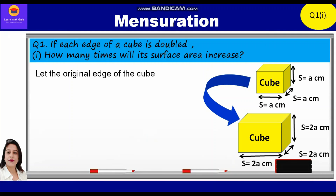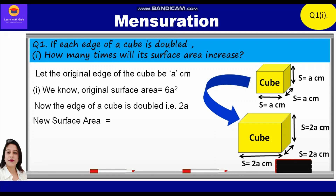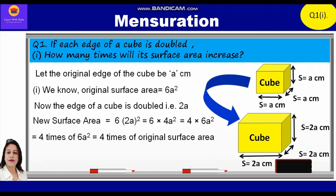Let's start with the solution. Let the original edge of the cube be 'a' centimeters. We know the original surface area is equal to 6a². Now the edge of a cube is doubled, that is 2a. Therefore, the new surface area is equal to 6 × (2a)² = 6 × 4a² = 4 × 6a² = 4 times of the original surface area. Therefore, the new surface area will be 4 times the original surface area.